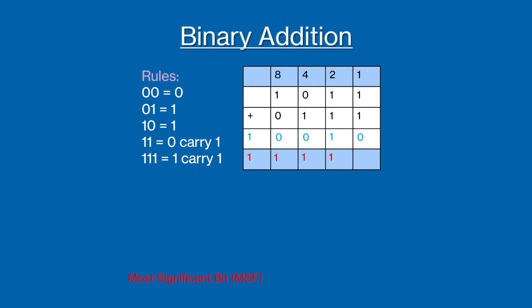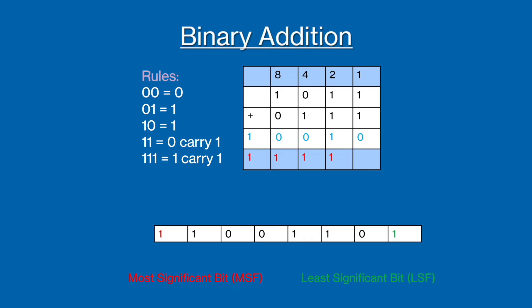Next, you need to know what the most and least significant bit of a binary value is, and it's pretty simple. The most significant bit is the bit in your binary value that has the highest value, so the most left hand bit. So if we look at this example, the bit in red is the most significant bit. Similarly, the least significant bit is the bit in the binary number with the lowest value, so the bit furthest to the right. So in this example, the least significant bit is the bit in green.